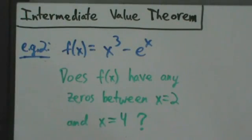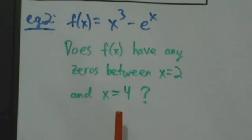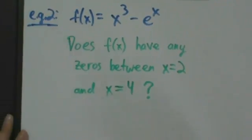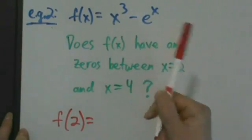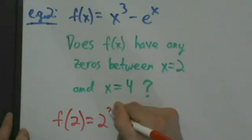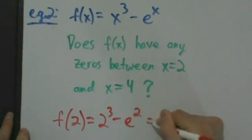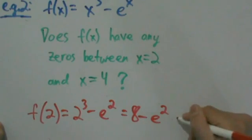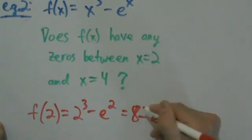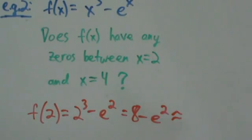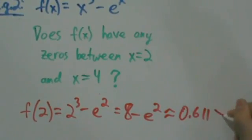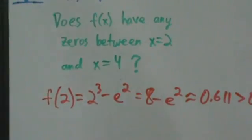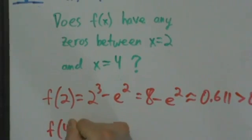So now we just see, do f(2) and f(4) have opposite signs? f(2) is 2 cubed minus e squared, so it's 2 cubed minus e squared which is 8 minus e to the second power, which is about equal to 0.611, which is positive.